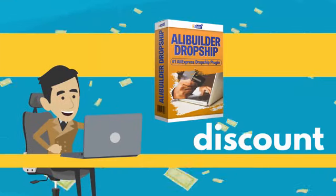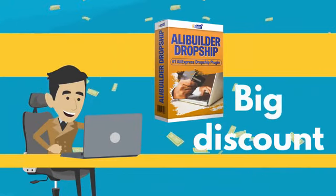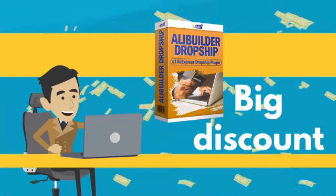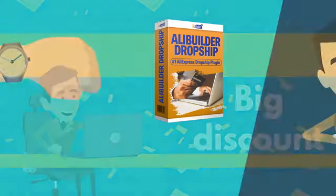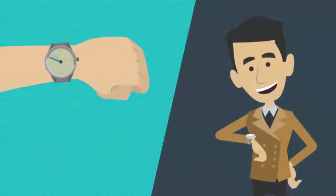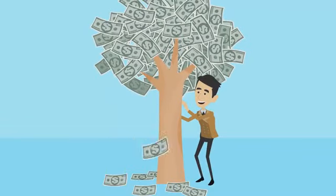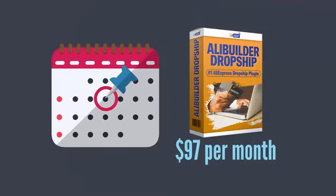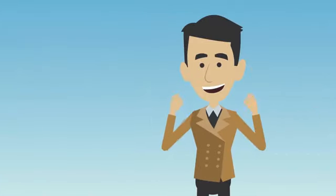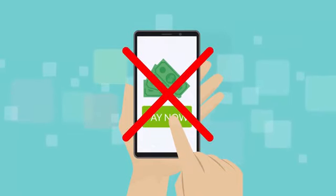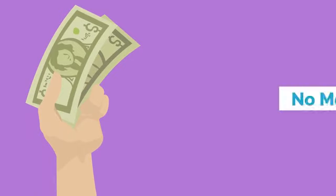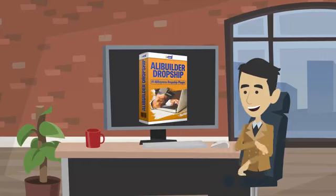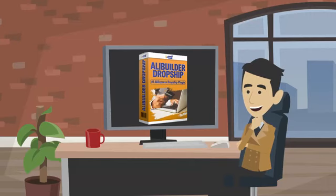Of course, the absolute best thing about OliBuilder is the big discount you can take advantage of when you get this powerful money-making store builder right now. Because of all the features that will save you countless hours and ultimately help you put money in your pocket, we could very easily charge $97 per month for access to OliBuilder — and it would be a great deal. The good news is, you are not going to have to pay $97 per month. When you click the button below right now, there's no monthly fee at all. You get instant access to OliBuilder right now for a low one-time investment.